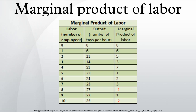Examples: There is a factory which produces toys. When there are no workers in the factory, no toys are produced. When there is one worker in the factory, six toys are produced per hour. When there are two workers in the factory, eleven toys are produced per hour. There is a marginal product of labor of five when there are two workers in the factory compared to one.